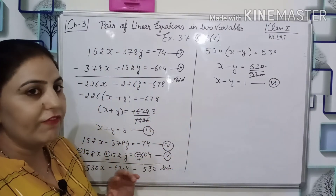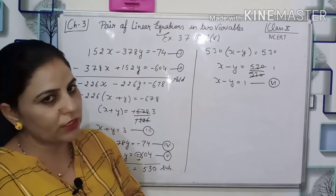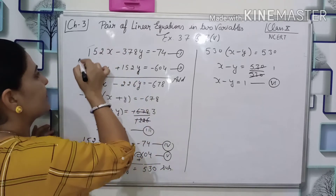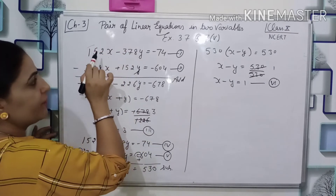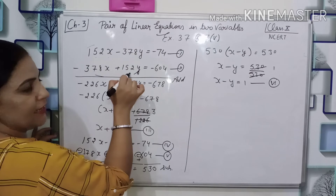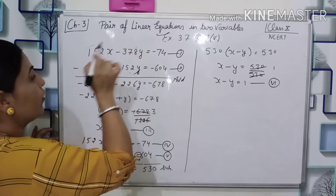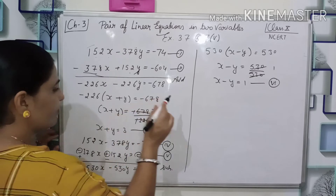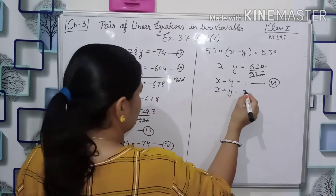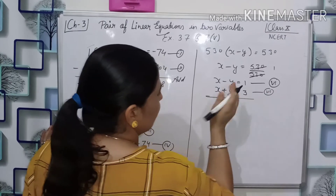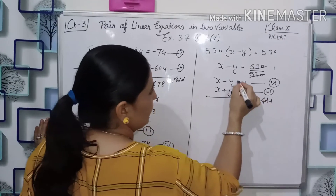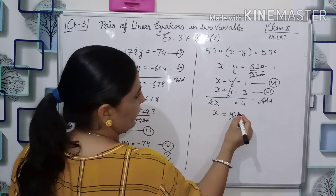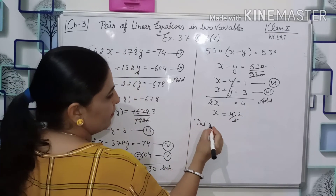Now I will apply elimination to these two simplified equations. When I added the original equations I got x plus y equals 3, and when I subtracted I got x minus y equals 1. This rule of adding and subtracting is applied only when the coefficient of y in equation 1 is the same as the coefficient of x in equation 2. Now adding equation 3 (x plus y = 3) and equation 6 (x minus y = 1): the y terms cancel and we get 2x equals 4, so x equals 2.